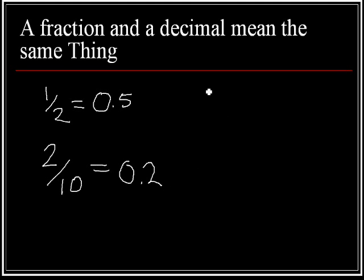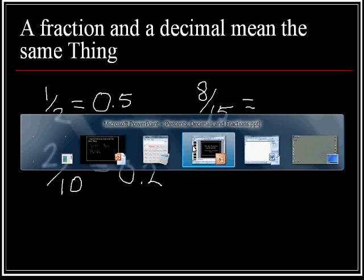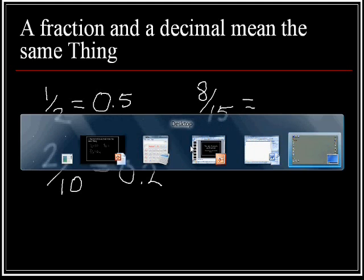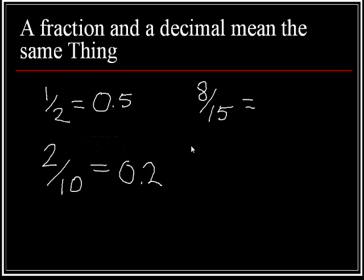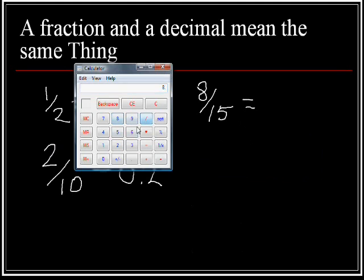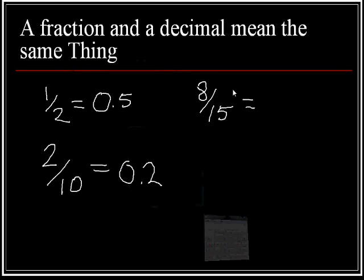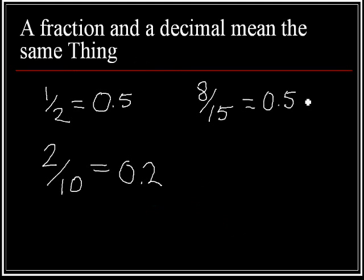If I had eight over fifteen, well, I'm not quite sure what that is. So, I'm going to go and I'm going to use my calculator. I'm going to go eight divided by fifteen equals point five three three three three three three three. So, what we're going to do is we're going to put zero point five three repeating. All of these mean the same thing.